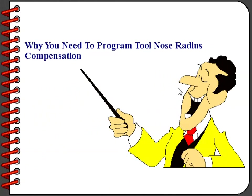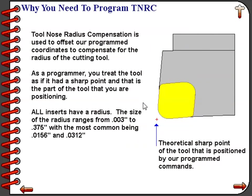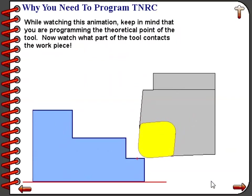Let's take a few minutes to introduce Tool Nose Radius Compensation — a very powerful feature that can save hours of manual calculations. When writing our program, we treat the tool as if it had an actual sharp point on it. But all tools have a radius on them; if ground to a sharp point, that point would break off quickly. Therefore, all carbide insert tooling has a radius on it. Most insert radii are in the range of 15 to 31 thousandths, though in special circumstances the radius can be as small as 3 thousandths up to 3/8 of an inch or larger on big equipment.